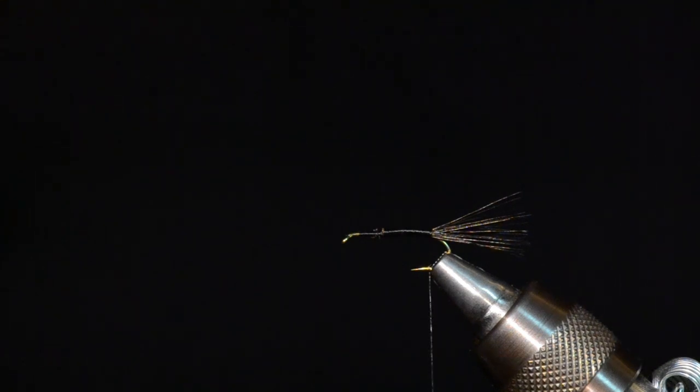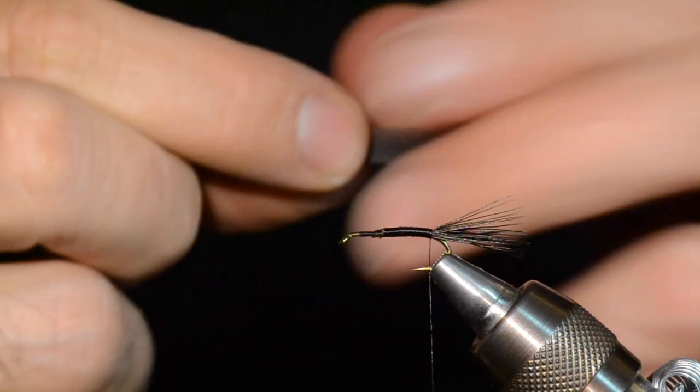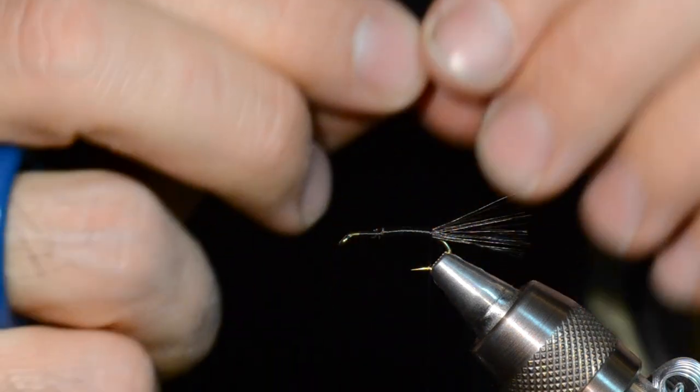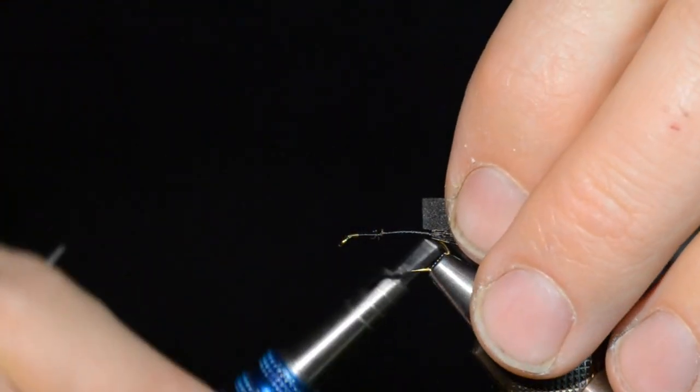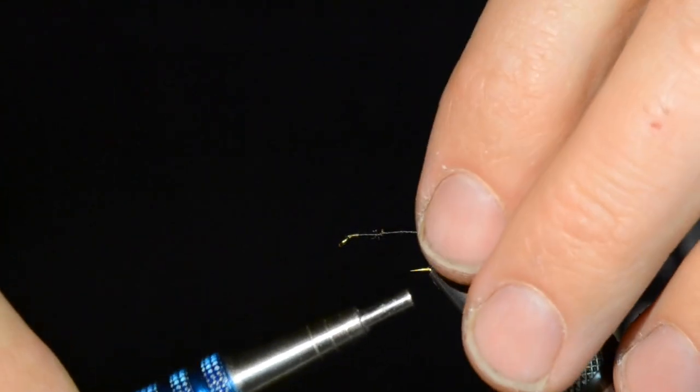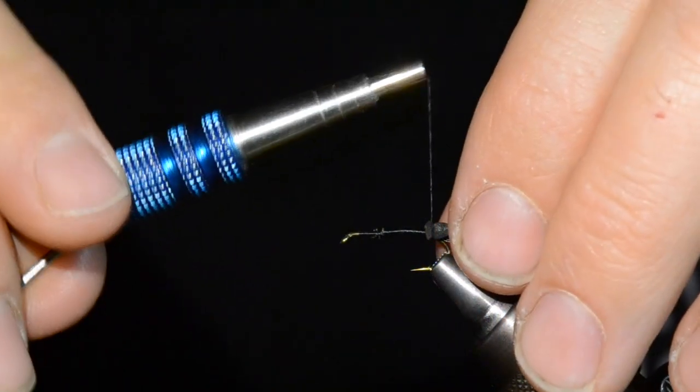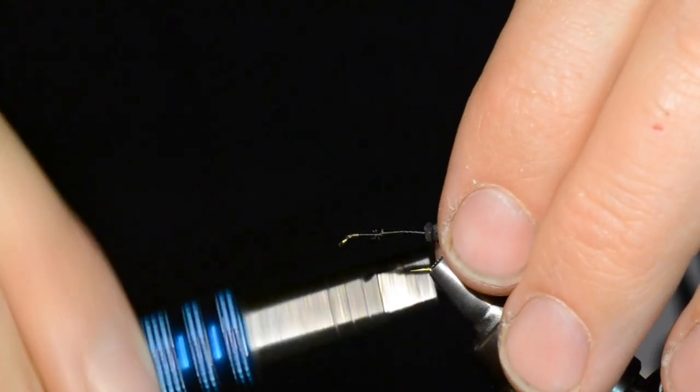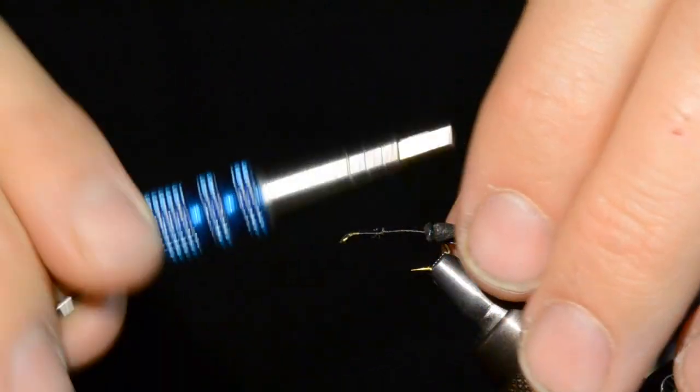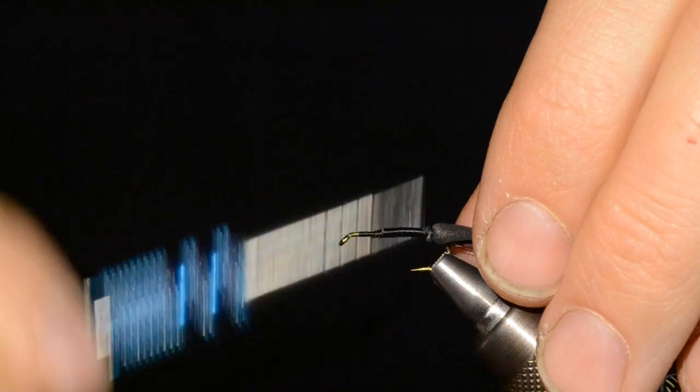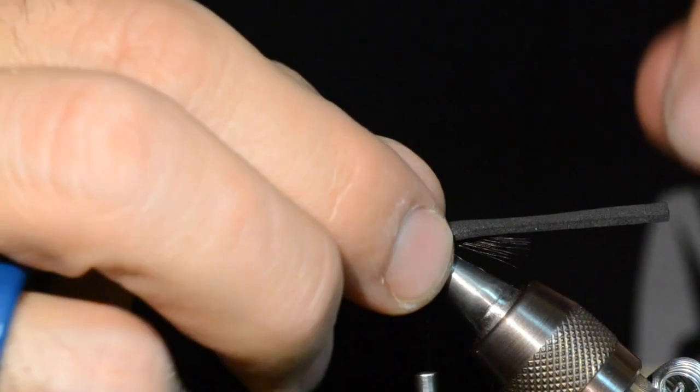I'm going to cut that off nice and close. Make a few more wraps just to hide those butt ends. And then let's advance our thread backwards to the end of that tail where we tied it in. Next step is our 1mm black foam overbody. This is about equal to one hook gap width. I'm going to tie it in right near the end there. Don't go to full tension right away, just moderate thread tension. Make sure it's positioned where you like, one or two more wraps around it, then you can apply a little bit more tension. Just bury that tie-in, the little tag end of it.